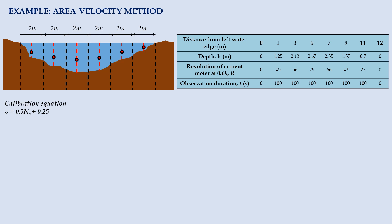Consider a cross section of stream with a total width of 12m. The cross section is divided into six vertical subsections of 2m width. Then, current meter is deployed at the centerline of each strip. The calibration equation for the current meter is 0.5ns plus 0.25 meter per second, where ns is the average number of revolutions per second. The collected data are tabulated as below.